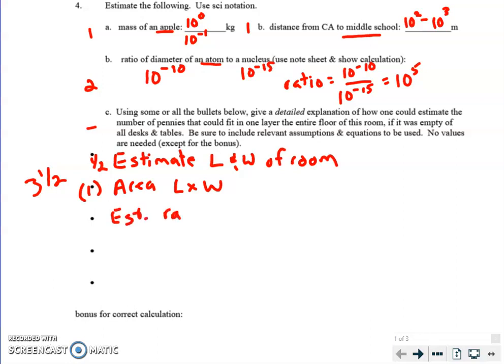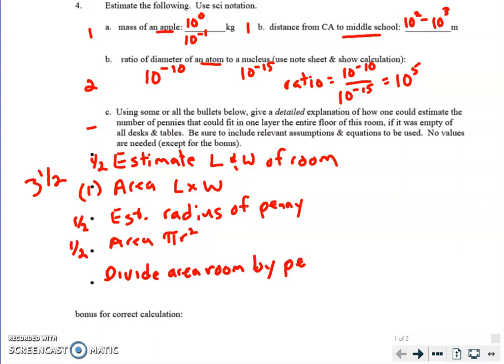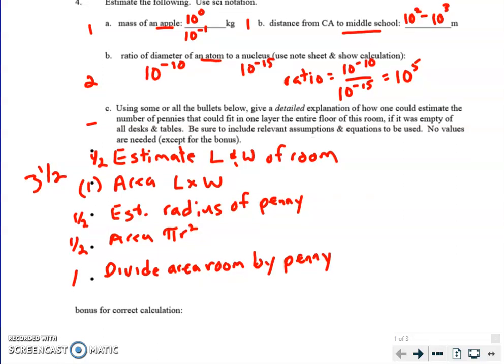So find area of the room by doing length times width. There's one point. Estimate the radius or diameter of penny. Area is πr². I would even accept length times width because you can treat it as a square. So each of these is worth a half point, some statement thereof. And then divide area of the room by penny. And that's worth one full point. It's not good enough to say estimate the area of the room or estimate the area of the penny. How do you estimate that? You got to go into some specifics there.